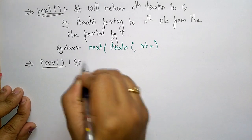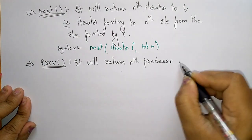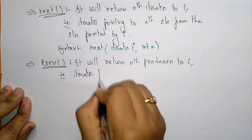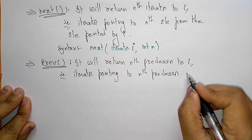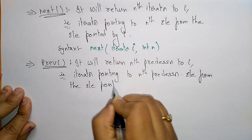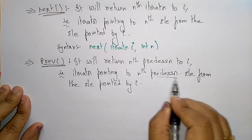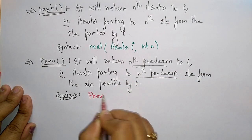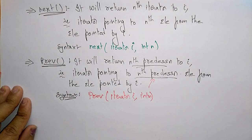The previous operation returns an iterator pointing to the nth predecessor element from the element pointed by i. The syntax is: prev(iterator i, int n), where int n points to the nth predecessor element.